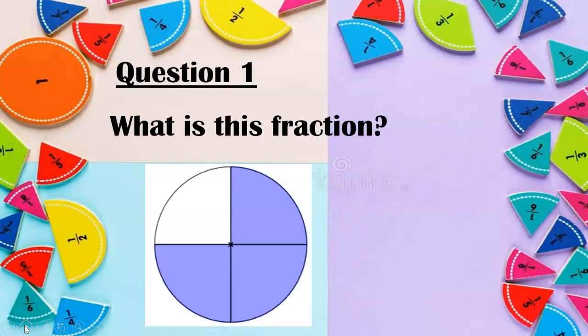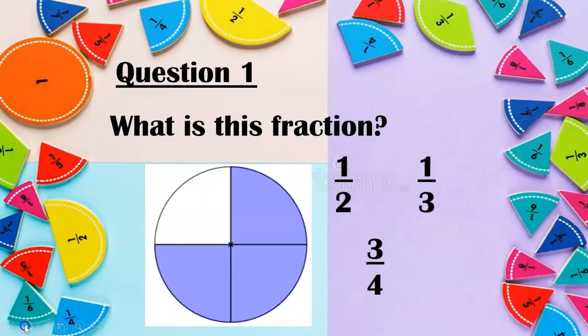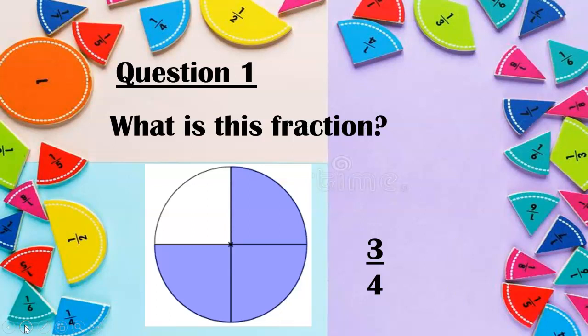What is this fraction? Is it a half? Is it a third? Is it three quarters? Or is it one quarter? Our numerator tells us how many are shaded and our denominator tells us how many pieces we have all together. It is not a half and it's not a third. Jot it down on your paper. Well done if you said three quarters.